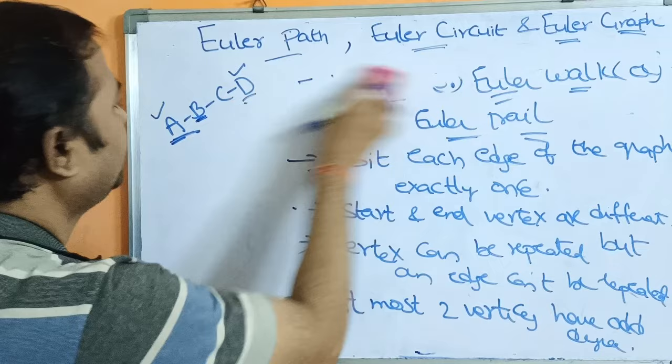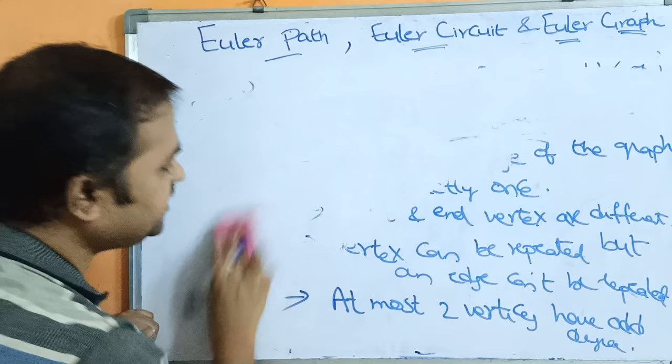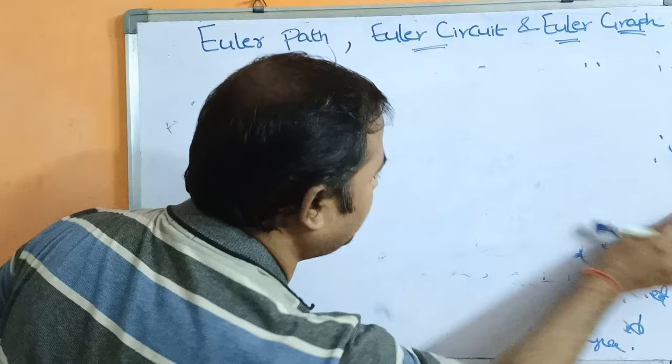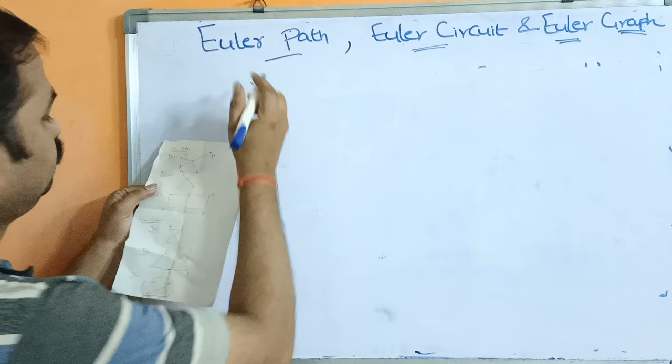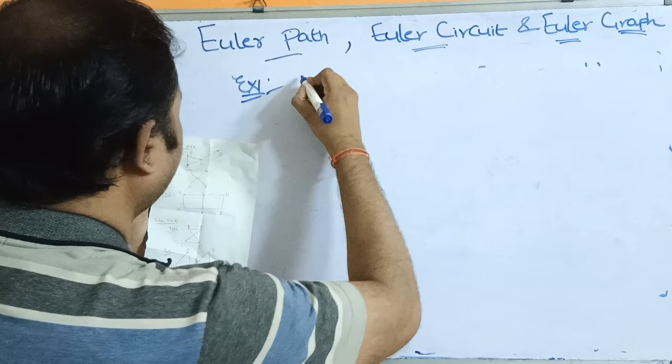Now let us solve some problems regarding Euler path. We will see some examples and then move on to Euler circuit and Euler graph. We have three examples regarding Euler path. This is the first example.